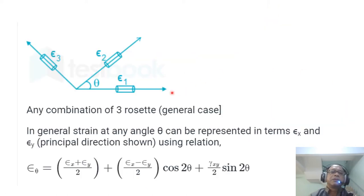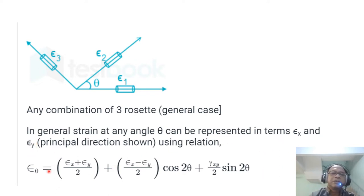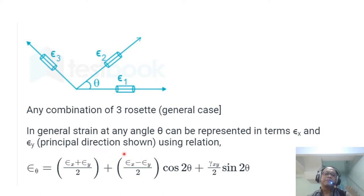This is another way of looking at any combination of three rosette gauges in the general case. The strain in theta 1, theta 2, and theta 3 can be represented using the general relationship — if you know epsilon x and epsilon y — using the strain transformation equation. This has led us to the Mohr's circle of strain. The strain rosette becomes a practical way of implementing this for plane strain.